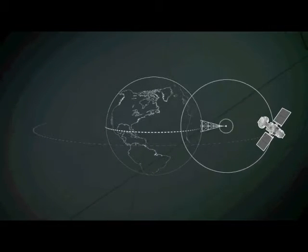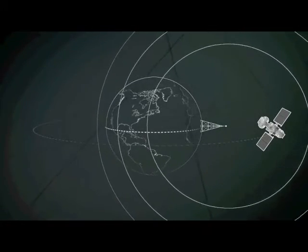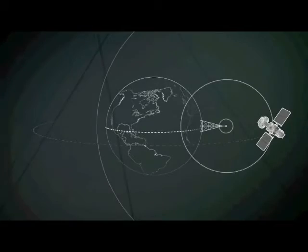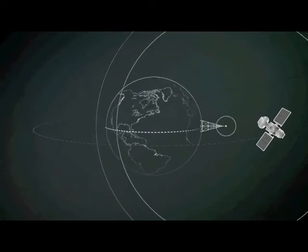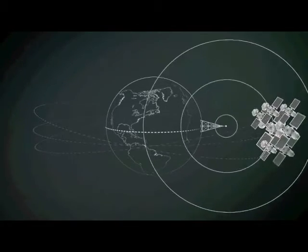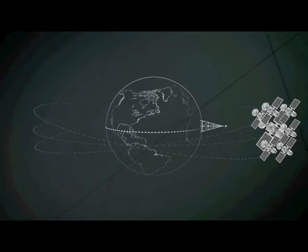The advantage is that antennas on the ground do not have to move to track a satellite, but it also means that this part of space becomes crowded. Because satellites must be kept a certain distance apart to avoid radio interference, only a limited number of orbital slots is available.